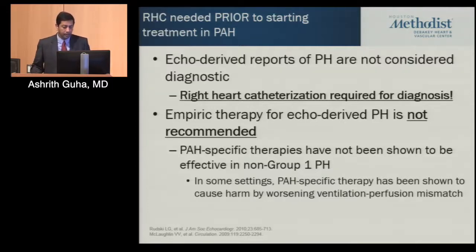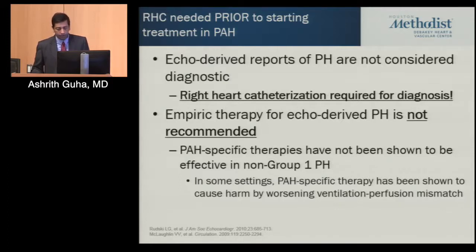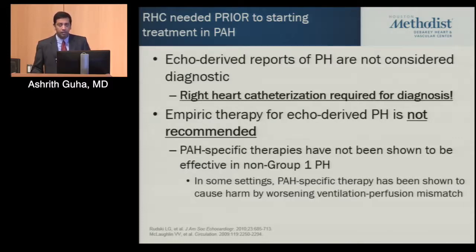I want to reiterate: ECHO-derived reports of PH are not considered diagnostic. If you have a patient with unexplained dyspnea, or dyspnea out of proportion to their underlying disease, consider a right heart catheterization. Since the diagnosis is based on mean PAH pressure — which you cannot get on an echocardiogram — you really need a right heart cath before starting treatment. In patients with group 2 pulmonary hypertension or left heart disease, starting PH-specific therapy can actually cause them to worsen.